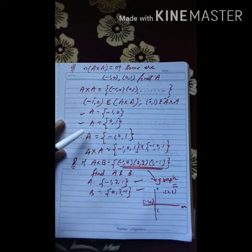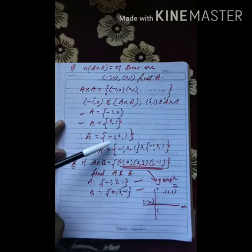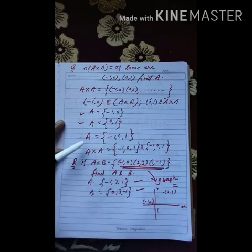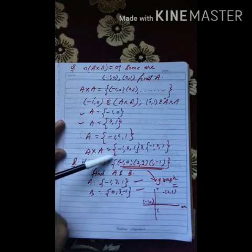So, we can say that set A having elements {-1, 0, 1}. This is the required set. Now, we have to find the remaining order pairs of A x A. So, again find the order pairs of A x A in this manner.